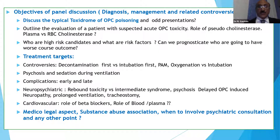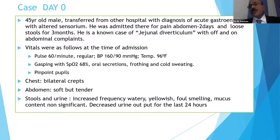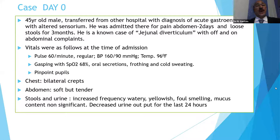I'll discuss a case: a 45-year-old male transferred from another hospital with a diagnosis of acute gastroenteritis. He was admitted there for abdominal pain for two days and had loose stools for three months — a known case of diverticulum. On admission, pulse rate 60, BP 160/90, temperature slightly hypothermic, gasping with 68% saturation, oral secretions and frothing, and cold whole-body sweating.